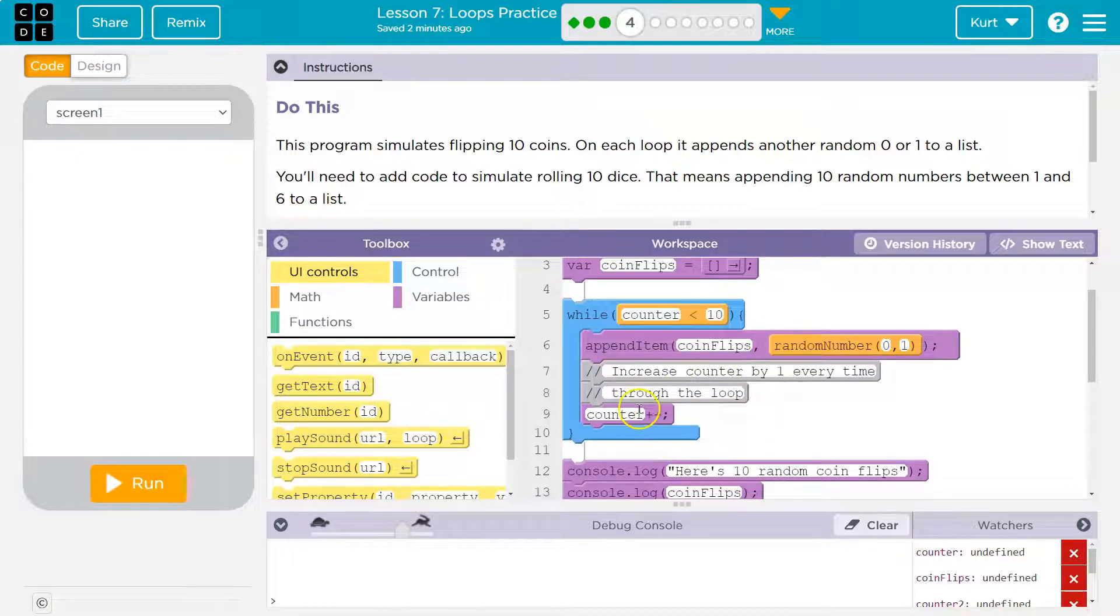We then hit this, and remember this means make counter equal to counter plus one. So counter was at zero. Counter is now equal to one. We hit the bottom. Counter is one less than 10. Yes, it is. And so we dip back into our loop.